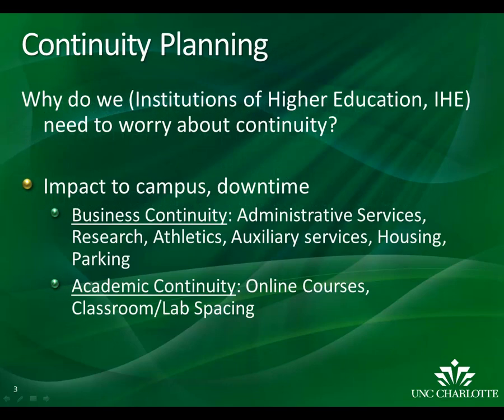So what is continuity, and why do we need to worry about it? Continuity is the resumption of services at a predetermined objective time. Continuity planning at UNC Charlotte is broken down into business continuity and academic continuity due to the different needs of stakeholders on campus. The business continuity end deals with administrative services, research, athletics, auxiliary services, housing, and parking, among others, while the academic continuity deals with online courses, classrooms, and lab spacing.